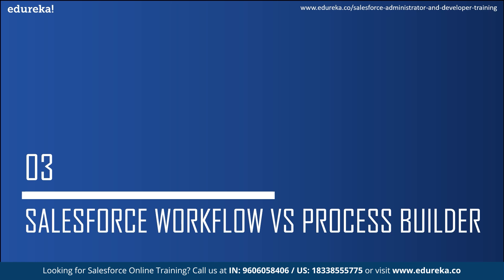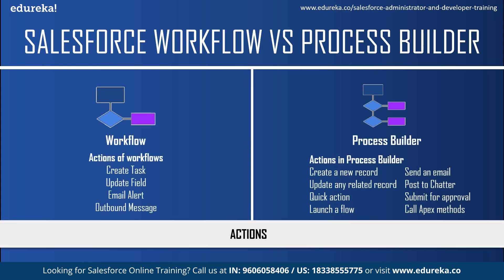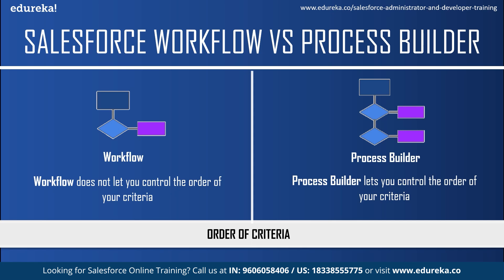Now let's look at the differences between workflow and process builder. The first difference is the actions available: in workflow, you can automate only four actions — sending an email, sending an outbound message, field update, or a task. Whereas in process builder you can perform eight actions, including creating or updating a record, invoking another process, launching a flow, submitting a record for approval, or posting to Chatter. Notably, process builder cannot send an outbound message, so for that you should use workflow. The second difference is that workflow does not let you control the order of your criteria, whereas process builder lets you control the order.